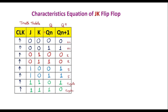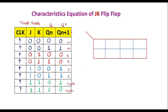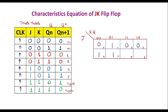We have 3 inputs — J, K, and Qn — so we need an 8-cell K-map. Cell 0 (J=0,K=0,Q=0)=0; Cell 1 (J=0,K=0,Q=1)=1; Cell 2 (J=0,K=1,Q=0)=0; Cell 3 (J=0,K=1,Q=1)=0; Cell 4 (J=1,K=0,Q=0)=1; Cell 5 (J=1,K=0,Q=1)=1; Cell 6 (J=1,K=1,Q=0)=1; Cell 7 (J=1,K=1,Q=1)=0.